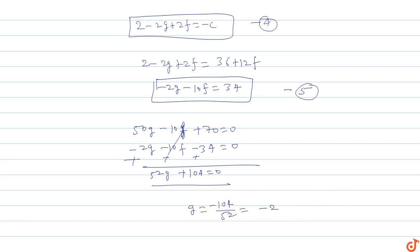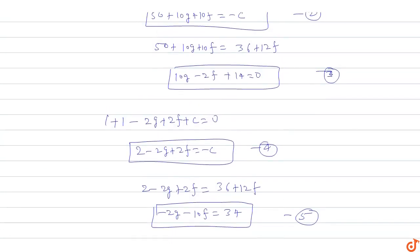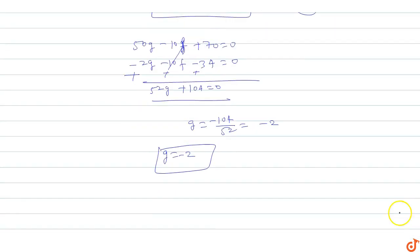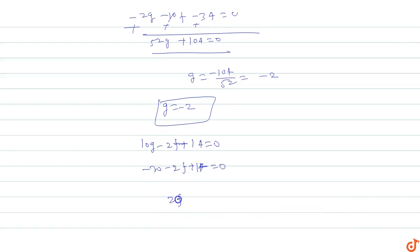Substituting g = -2 into equation three: 10(-2) - 2f + 14 = 0, giving -20 - 2f + 14 = 0, so -2f = 6, thus f = -3. So f = -3.